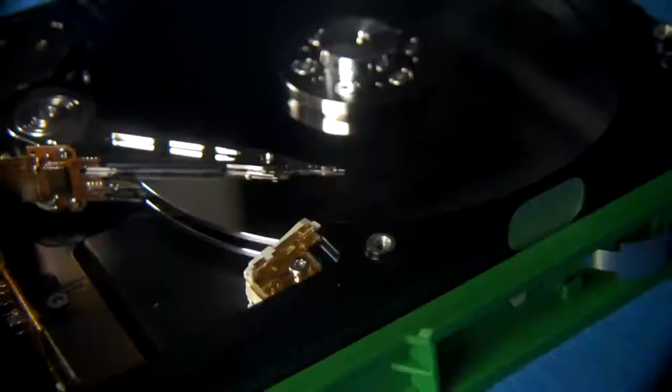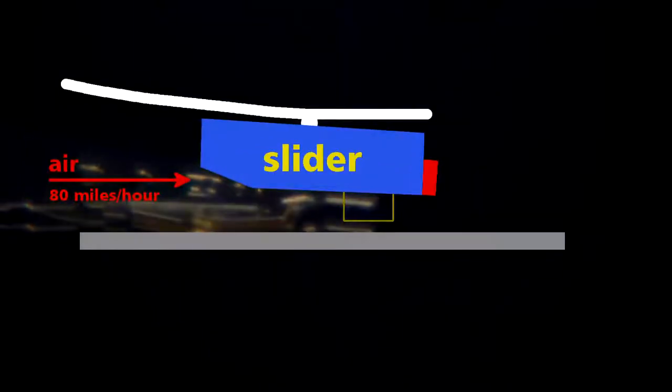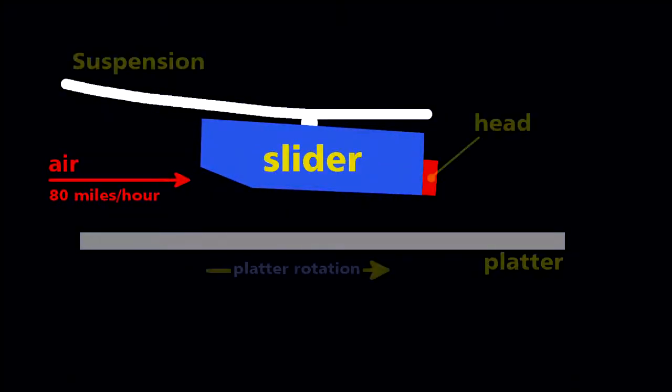To keep that critical height, engineers use an ingenious method. They float the head over the disk. You see, as the disk spins, it forms a boundary layer of air that gets dragged past the stationary head at 80 miles per hour at the outer edge.